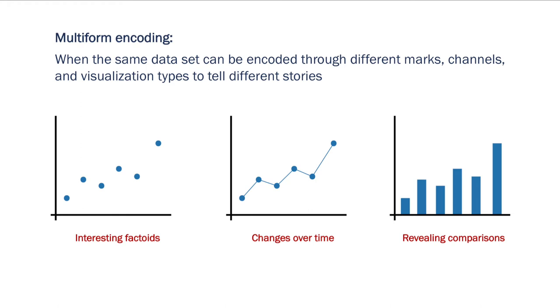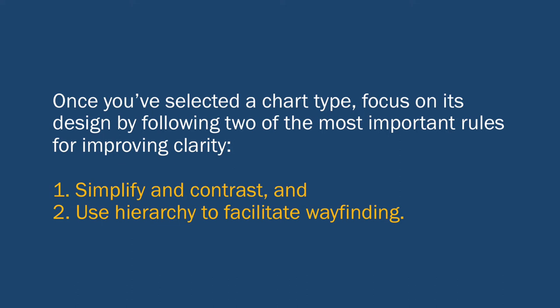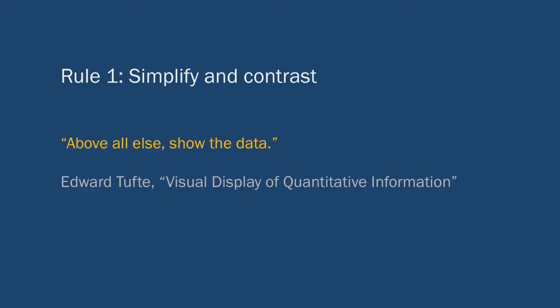So the first step to improving the clarity of a figure is understanding what is the point of this visualization, and then translating that purpose into design elements like mark type or channel. Once you've selected a chart type, you can focus on its design to improve its clarity that way. I have two big tips for improving the clarity of a figure through design. The first is to simplify and contrast, and the second is to use hierarchy to facilitate wayfinding.